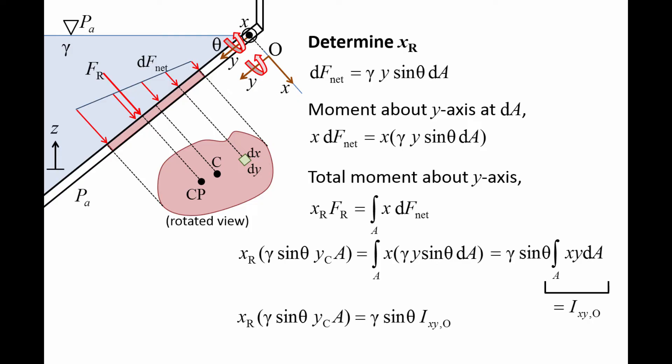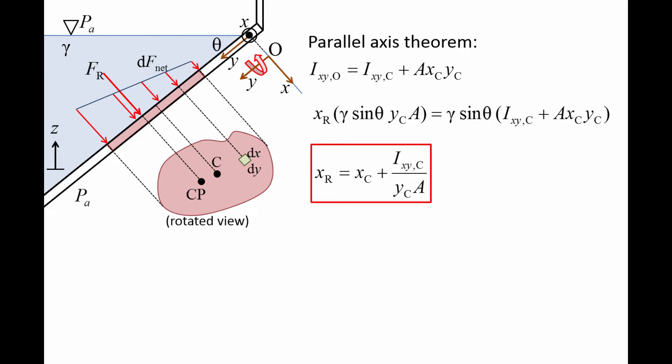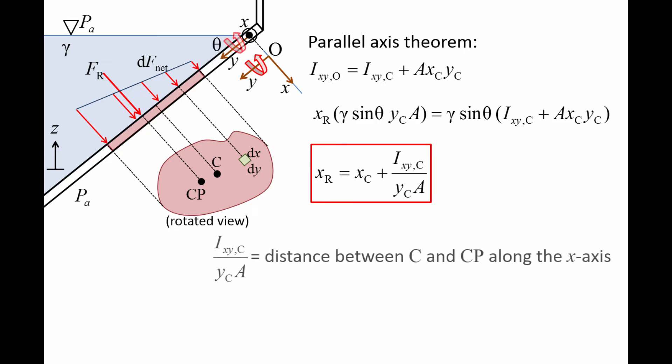So the right side of the equation becomes gamma sin theta times IXYO. It can be difficult to calculate the product moment of area about an arbitrary set of X-Y axes. However, for common shapes, it is easy to calculate this quantity about a parallel set of orthogonal axes that pass through the centroid, which we call IXYC. The parallel axis theorem relates IXYO and IXYC. Plugging in the expression for IXYO, we find that XR is equal to XC plus IXYC divided by YC times A. The second term, IXYC divided by YC times A, is the distance between the centroid and center of pressure along the X-axis.